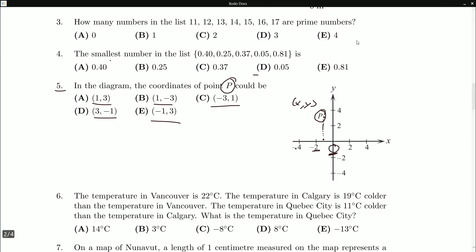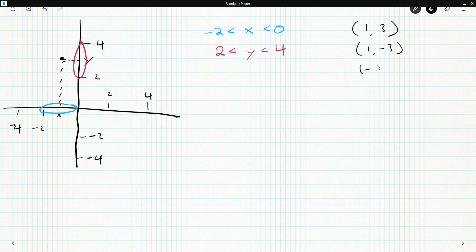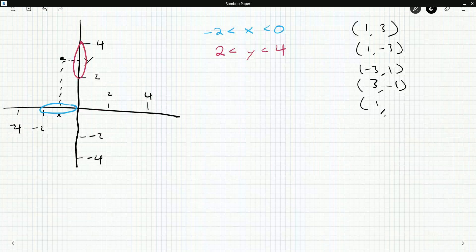And so if we just write down our possibilities: (1,3), (1,-3), (-3,1), (3,-1), and then (-1,3).